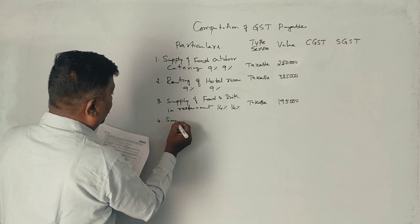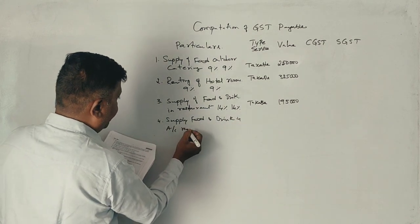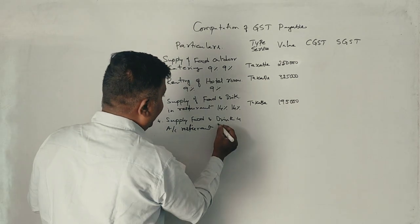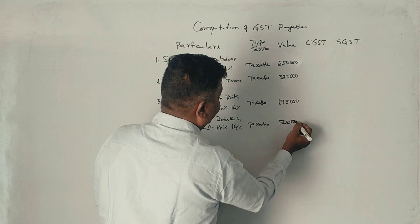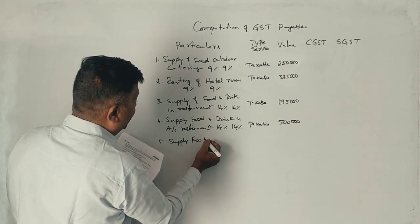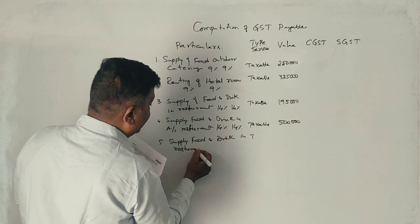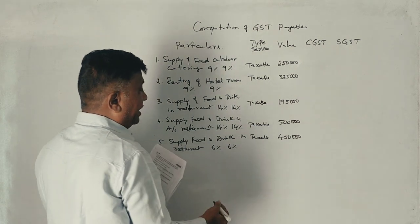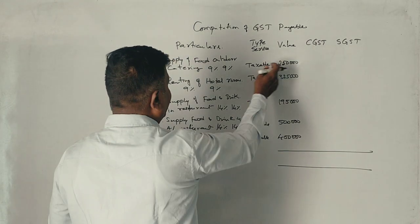Supply of food and drink in AC restaurant in five-star hotel, so five-star hotel, 14%. This is also taxable service, so value is 5,00,000. Next, last point, fifth one: supply of food and drink in restaurant, taxable, value is 4,00,000, 6%.